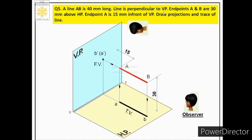Since the line is perpendicular to VP, extending it will cause it to intersect VP, giving us the vertical trace of the line. One important point to note: when we extend this line to intersect the vertical plane to obtain its vertical trace, we find that the extension intersects its front view only. So the front view itself is the vertical trace of the line.